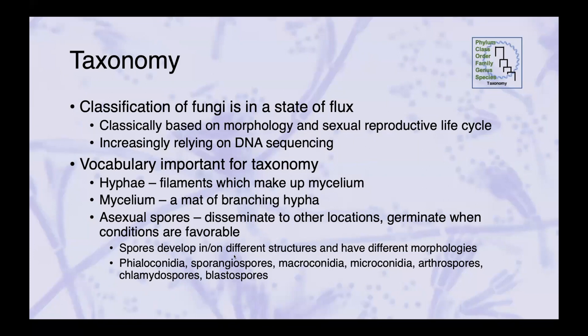There's a little bit of terminology that's important to understand in taxonomy. Hyphae are perhaps the most important — these are the filaments which make up the mycelium. The mycelium is a mat of branching hyphae, which is sort of what you think of when you think of a mold — that fuzzy, fluffy kind of structure. Molds also produce asexual spores, which disseminate to other locations and germinate when conditions are favorable. These spores develop in or on a variety of different structures: conidiophores, sporangiospores, macroconidia, microconidia, arthrospores, chlamydospores, and blastospores — all important to describing the different fungi of importance to human and veterinary medicine.